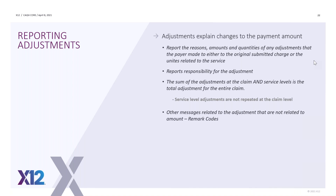The sum of the adjustments at the claim and service level is the total adjustment for the entire claim. Service level adjustments are not repeated at the claim level. Other messages related to adjustments that are not related to the amount would be remark codes. There are alert codes that give extra information but don't necessarily have anything to do with the adjustment amount — for instance, there's an alert that is typically reported saying you have the right to appeal.